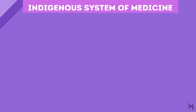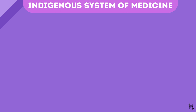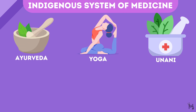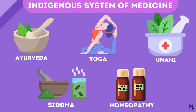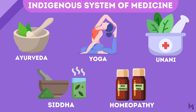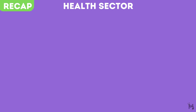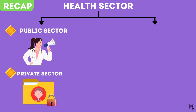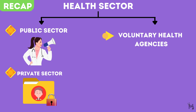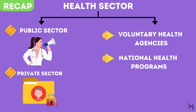The fifth and last sector is the indigenous system of medicine, which focuses mainly on AYUSH — Ayurveda, Yoga, Unani, Siddha, and Homeopathy. We have already discussed this in detail in our previous video. To quickly recap, the health sectors in our country can be broadly divided into five categories: the public and private sectors being the primary ones, while the others include the voluntary health agencies, national health programs, and the indigenous system of medicine.